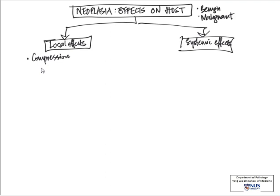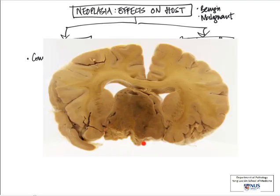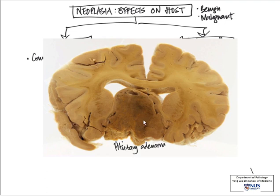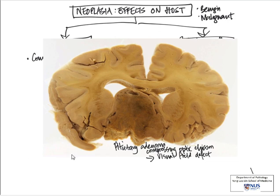The first effect we're going to look at is local compression. Take, for example, a pituitary adenoma, which is actually a benign tumor. Here is an example — this is the tumor, and it is actually compressing upon the optic chiasm. So patients can present with visual field effects due to compression on this adjacent structure. Sometimes the tumor can expand so much that it compresses on the non-neoplastic aspects of the pituitary gland, giving rise to decreased hormone production.